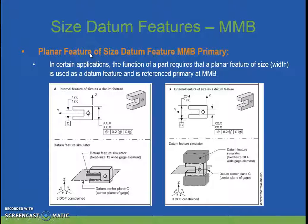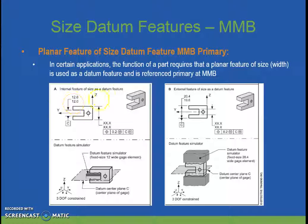This is a planar feature of size datum feature MMB boundary. We have a width feature that is being referenced as a datum feature and primary at MMB. Datum C is your width feature from 12.0 to 12.6, and it's an internal feature, so MMB occurs at 12.0. Being specified at MMB in relation to this feature, you would have a fixed 12 millimeter wide gauge that would fit in here, and as this feature got away from MMB, you would have clearance between the gauge and the actual part.